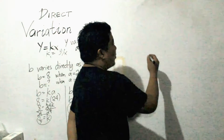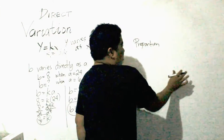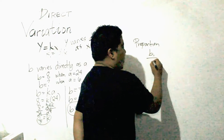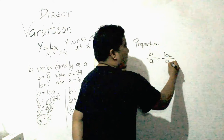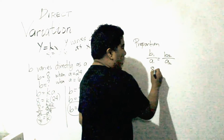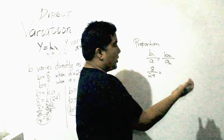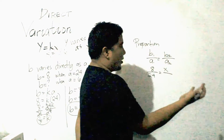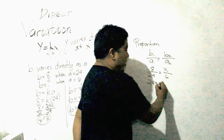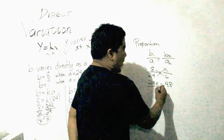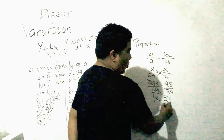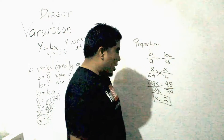The second way is by proportion. We set up B sub 1 divided by A sub 1 equals B sub 2 over A sub 2. Substituting: our first B is 8, our first A is 24, our second B is unknown x, and our second A is 6. By cross multiplication, 24x equals 6 times 8 which is 48. Dividing both sides by 24, we get 48 divided by 24 equals 2. So the second B is equal to 2.